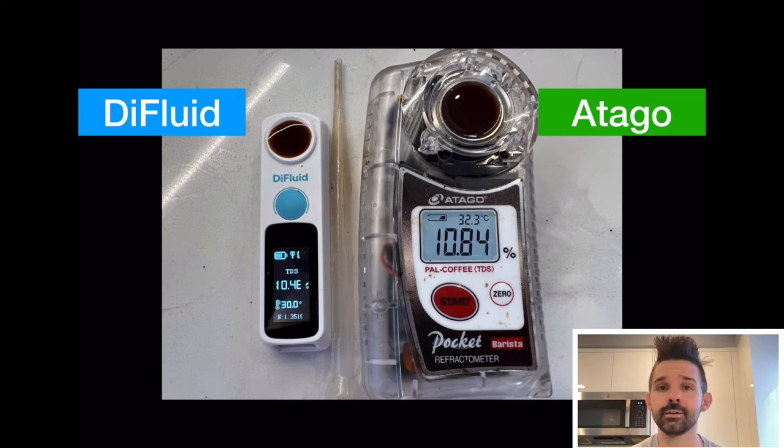So I've had an Atago for three years, but these aren't available in the United States. They're only available outside of the United States because of legal issues with VST. So VST is probably the most well-known digital refractometer, and it costs around $1,000, while an Atago is costing around $600 or $700, and a DiFluid costs below $200.